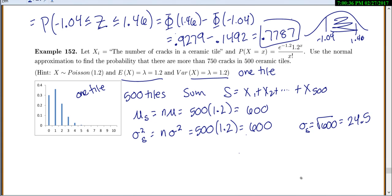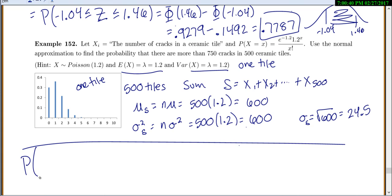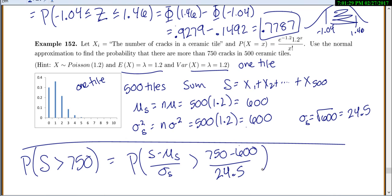Once you find the new mean and standard deviation, you go to the actual probability part. We're looking for the probability, we want more than 750 cracks, so the probability that S is greater than 750. One of the interesting things here is that this was a discrete distribution. For one tile, it was very discrete. Poisson is a discrete distribution. But with the central limit theorem, it says even if you start off with a discrete distribution, as long as you're looking at the average, or the sum of a lot of different ones, you'll still end up at a normal distribution, even if you start off discrete. We'll standardize, S minus the mean of S over standard deviation of S. So this will be greater than 750 minus our 600 divided by our standard deviation of 24.5. This gives us the probability that Z is greater than 6.12.